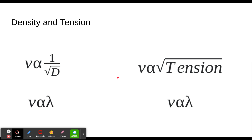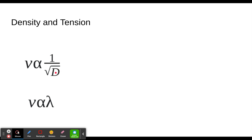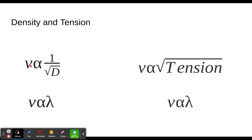Why does that work? If the density is getting bigger, the rope is heavier. Things with more mass accelerate slower, so the energy carries down the wave slower. For tension, on the other hand, the relationship is directly proportional with the square root — quadratically proportional. So if tension gets nine times bigger, velocity is three times bigger. If tension is four times smaller, the velocity is two times smaller. And once again, velocity is directly proportional to wavelength.